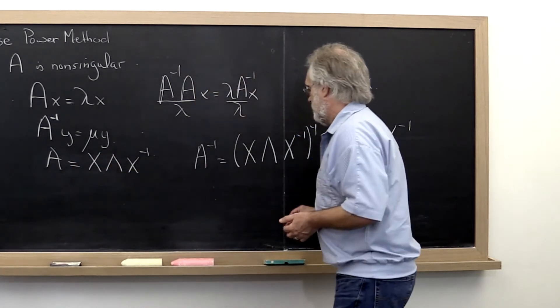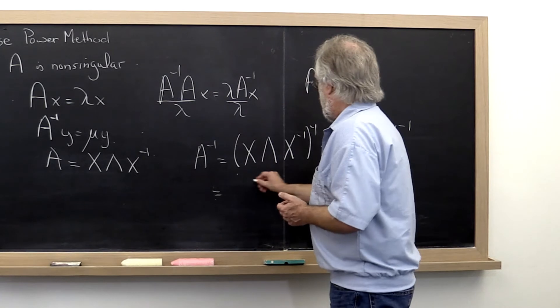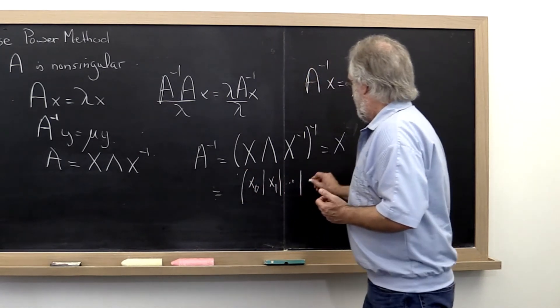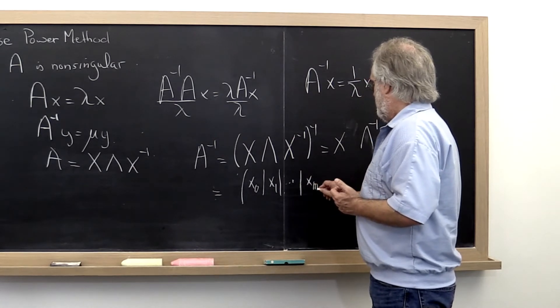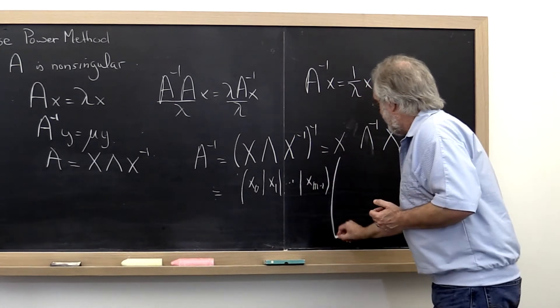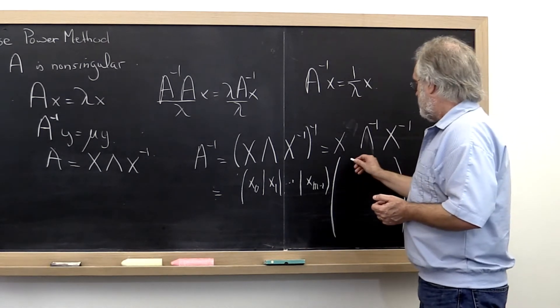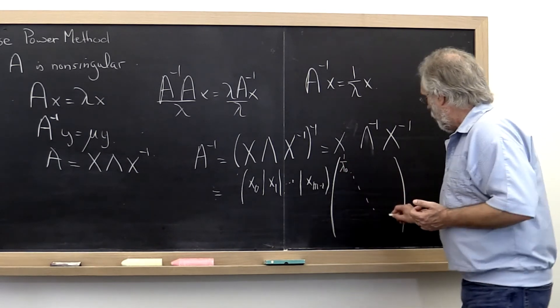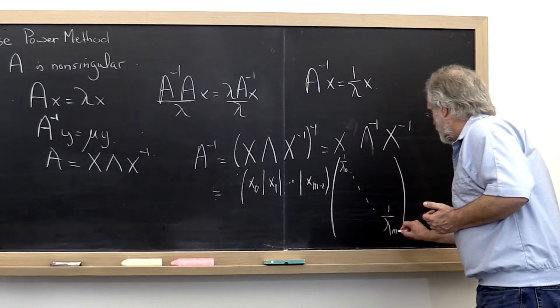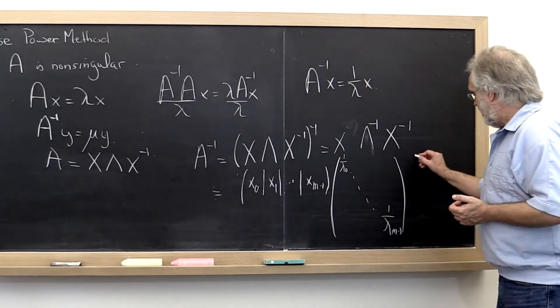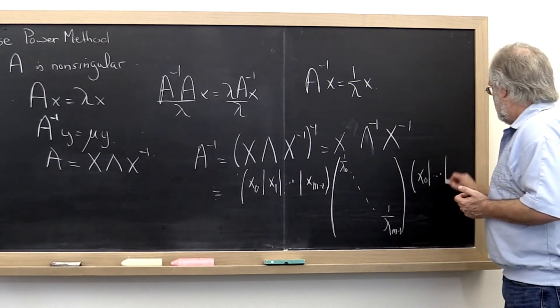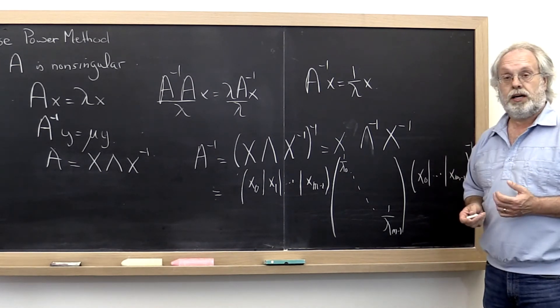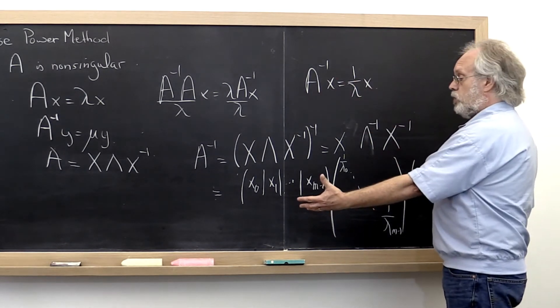So what do we notice? This is just equal to the matrix that are the eigenvectors of matrix A. And then the diagonal matrix that consists of the values 1 over lambda 0 through 1 over lambda M minus 1. And then the matrix X inverse. And from that we can totally read off what we need.